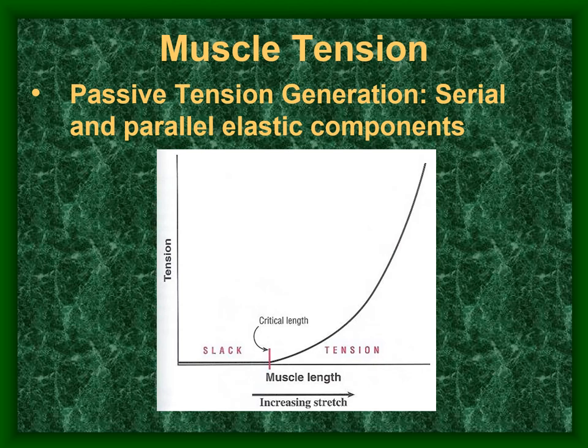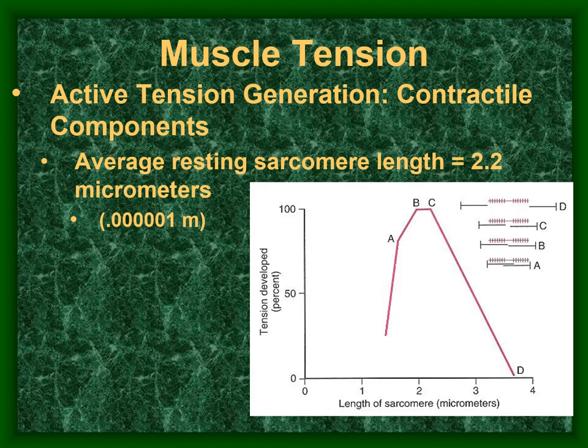Once passive tension begins — from the elastic components — it increases exponentially. Active tension is a function of the number of cross-bridges between actin and myosin. The sarcomere length where cross-bridges are maximized is about 2.2 micrometers. When the sarcomere is stretched beyond that, tension is passive. When shorter than 2.2 micrometers, cross-bridge potential decreases — this is called active insufficiency.